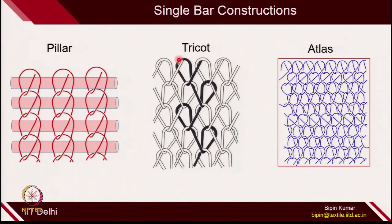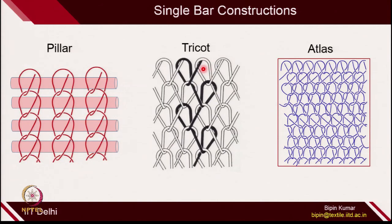The second structure is tricot, which is the most simple and widely used structure in the warp knitted category. In tricot as a single bar structure, the guide bar can shift from one needle to its alternate column, or to the second, third, or fourth needle depending on the construction. We talked about 1 cross 1 tricot, 2 cross 1 tricot, 3 cross 1 tricot, and 4 cross 1 tricot. In tricot, the overlap will always be 1 but the underlap keeps changing — you are basically changing the floating length.